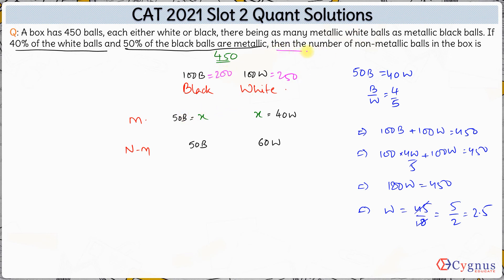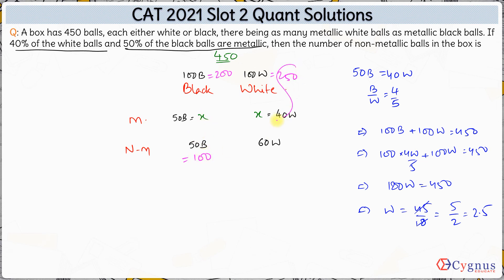Now we calculate the number of non-metallic balls. The non-metallic black balls are 50% of 200 = 100, and the non-metallic white balls are 60% of 250 = 150. So the total number of non-metallic balls is 100 + 150 = 250. The answer to this question is 250.